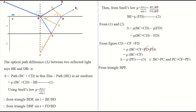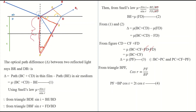From triangle BPF, cos r = BF/BP, so BF = BP * cos r. Since BP equals 2T (the film is traversed twice), we get BF = 2T * cos r. Substituting into equation 3, the path difference is 2*mu*T*cos r. So the effective path difference from the figure is 2μT cos r.